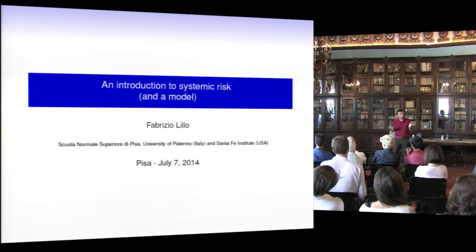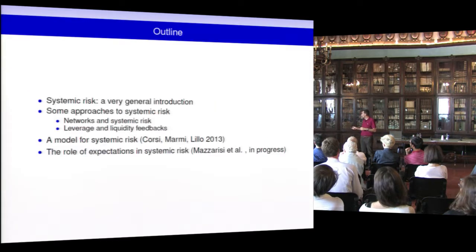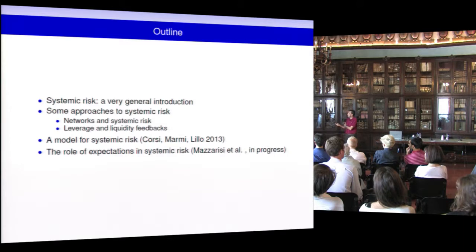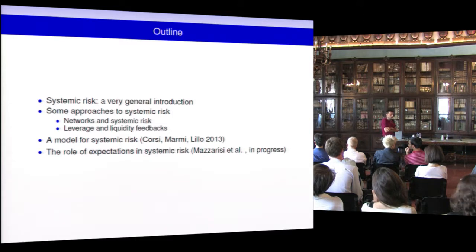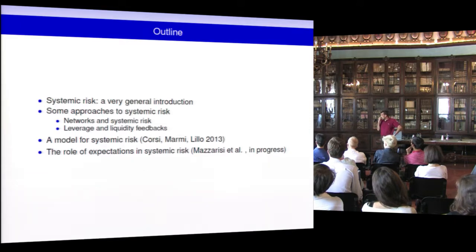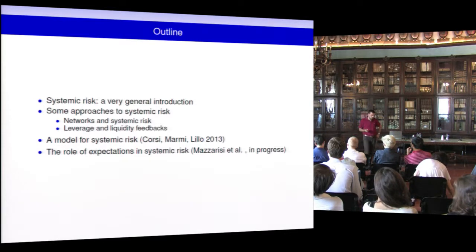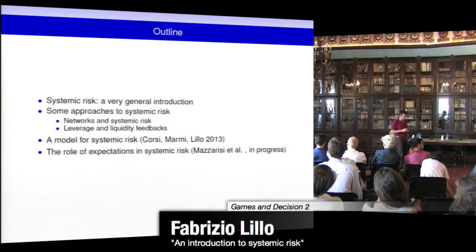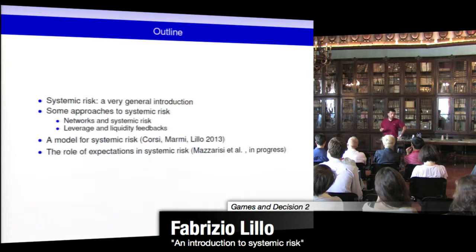So this is more or less the outline. I will give a very general introduction, then focus on some approaches to systemic risk — specifically the network aspect and the problem of leverage and liquidity feedbacks. Then I will present a model developed together with Fulvio Corsi and Stefano Marmi, and I hope to also present some work in progress by Piero Mazzarici on an extension where the expectations of financial agents play an important role for financial stability.